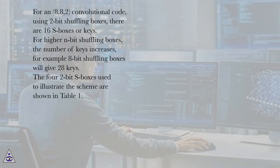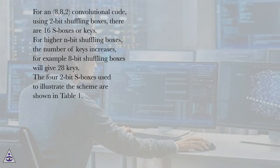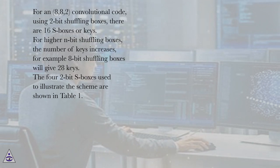For the N,8,8,2 convolutional code, using 2-bit shuffling boxes, there are 16 S-boxes or keys. For higher N-bit shuffling boxes, the number of keys increases; for example, 8-bit shuffling boxes will give 2^8 keys. The four 2-bit S-boxes used to illustrate the scheme are shown in Table 1.